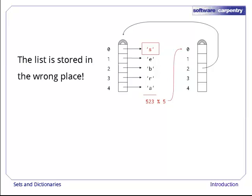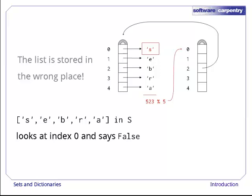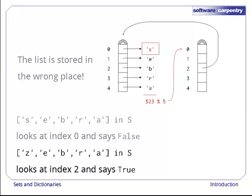This is bad, very bad. If we go looking for the list s, e, b, r, a, we'll look in location 0 rather than location 2 and get the result false when we should get true. And if we go looking for the original list z, e, b, r, a, we'll look in slot 2 and either get the wrong answer true, because there's something there, or blow up completely, since there's a value there, but it's not the one we asked about.